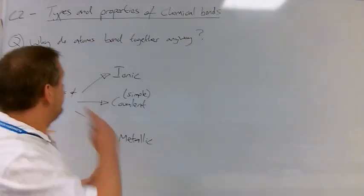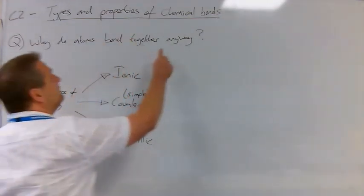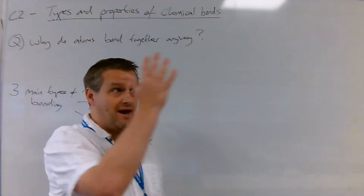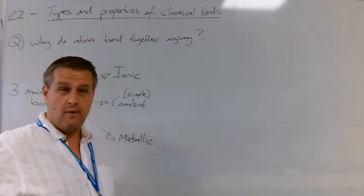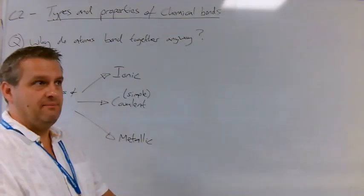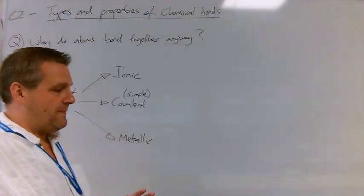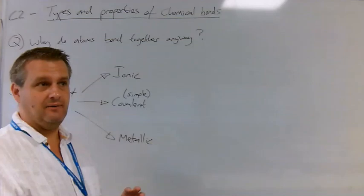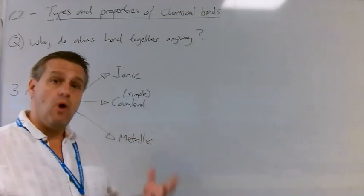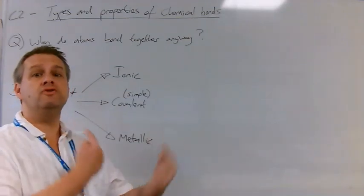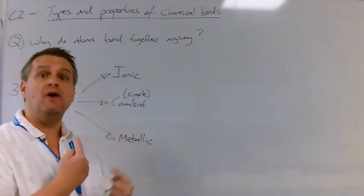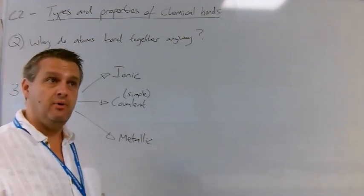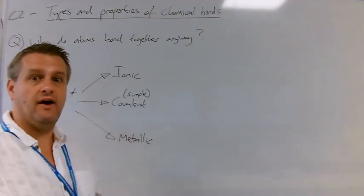Before we start, there's a really key important question to think about: why do atoms bond together in the first place? Why don't they just go around on their own? Some of them do — if you take your group eight elements, like helium, they go on their own. But nearly everything else would much rather be stuck to something. The reason atoms bond together is they want to become more stable. They are more stable when they have a full outer shell. So anything except group eight won't have a full outer shell, and if it can bond to something else and achieve a full outer shell, it will do so. That's why they bond together — their motivation is to get a full outer shell.